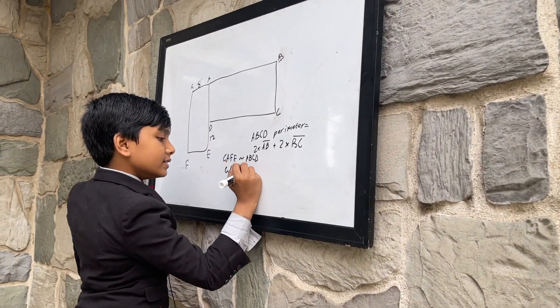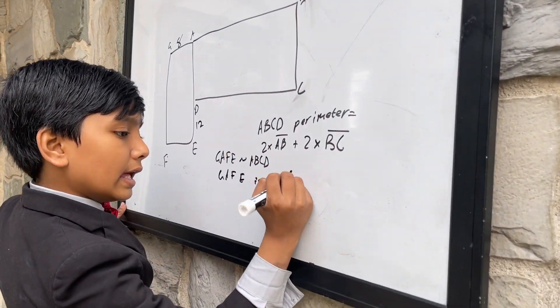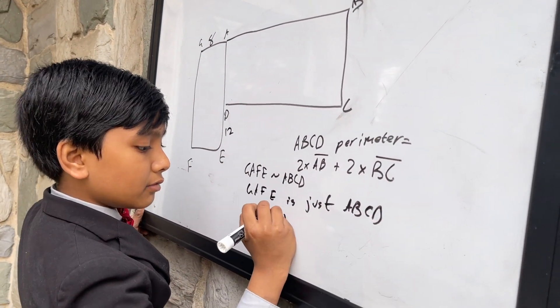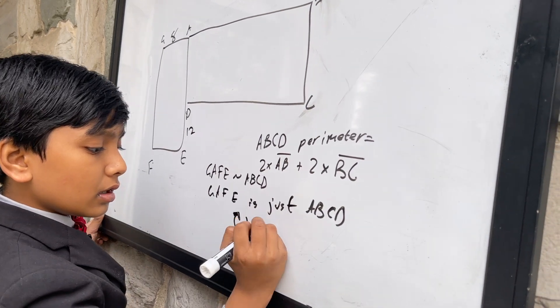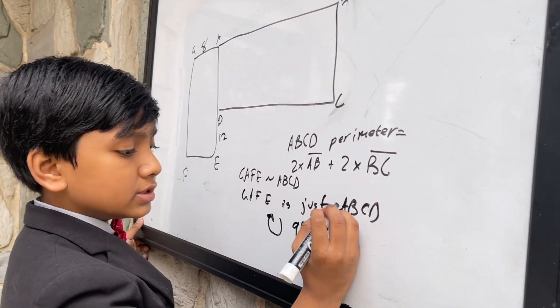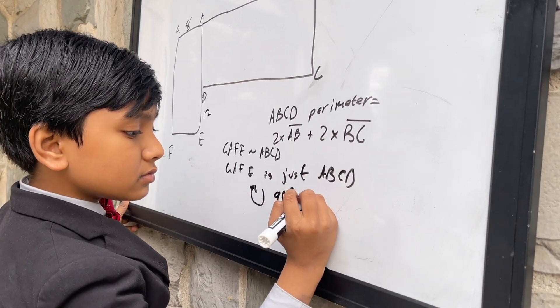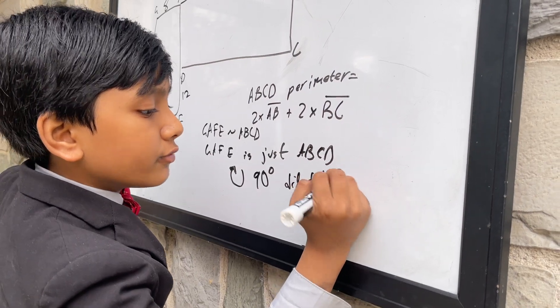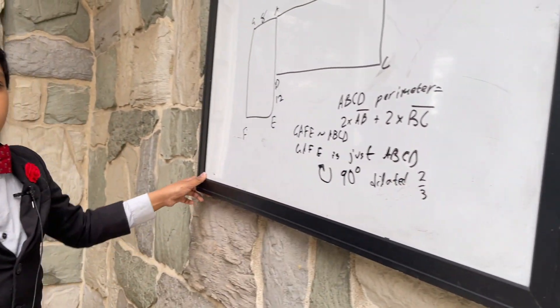The only thing is that GAFE is just ABCD, but with the following two transformations. It was rotated by 90 degrees and it was dilated by a factor of two-thirds, meaning it got smaller.